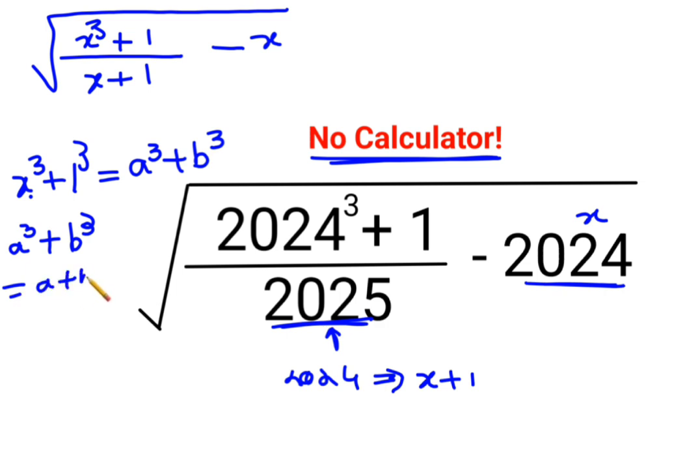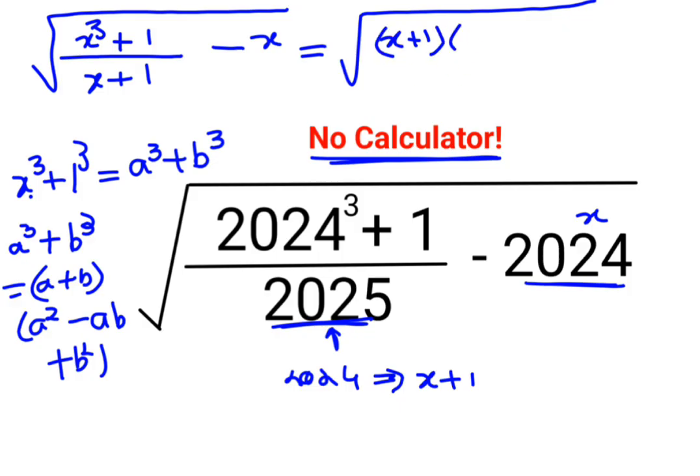a plus b, the whole multiplied by a square minus ab plus b square. Okay, so let's put it over here. We have X plus 1 multiplied by X square minus X plus 1.